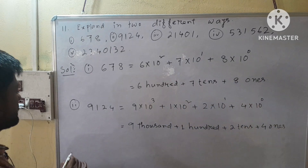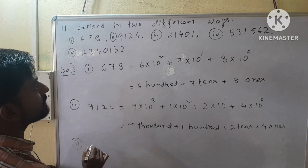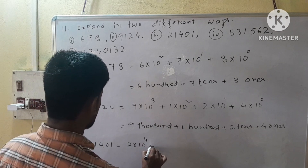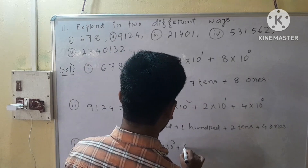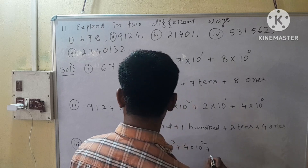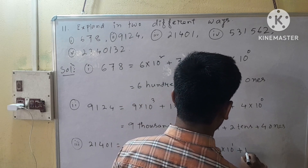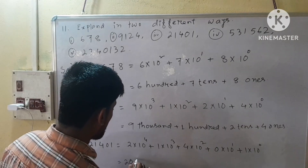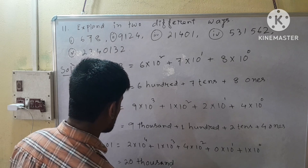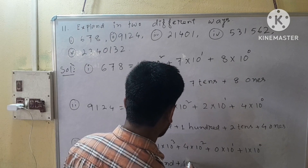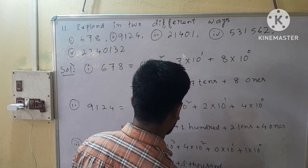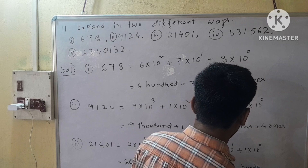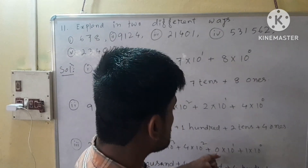Our next question is roman number 3. We have 21,404. So 2 into 10 to the power 4, plus 1 into 10 to the power 3, plus 4 into 10 to the power 2, plus 0 into 10 to the power 1, plus 1 into 10 to the power 0.